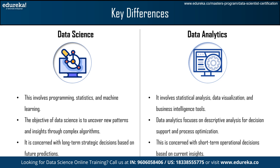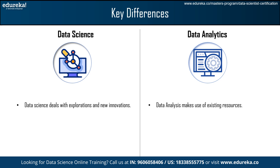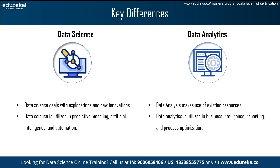In data science, it is concerned with long-term strategic decisions based on future predictions, whereas data analytics is concerned with short-term operational decisions based on current insights. Data science deals with exploration and new innovations, whereas data analytics makes use of existing resources. Data science is utilized in predictive modeling, artificial intelligence, and automation, whereas data analytics is used in business intelligence, reporting, and process optimization. Finally, data science deals with unstructured data, whereas data analytics deals with structured data.